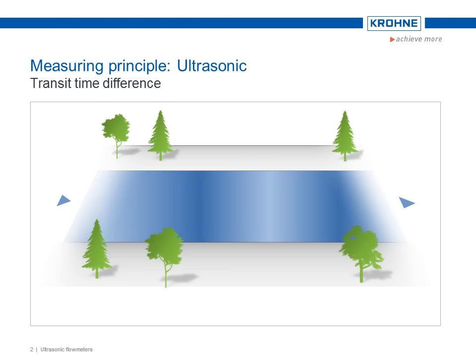Ultrasonic flow measurement with the transit time difference is based on one simple physical fact. Imagine two canoes crossing a river diagonally on the same line, one in the direction of the flow and the other against it.